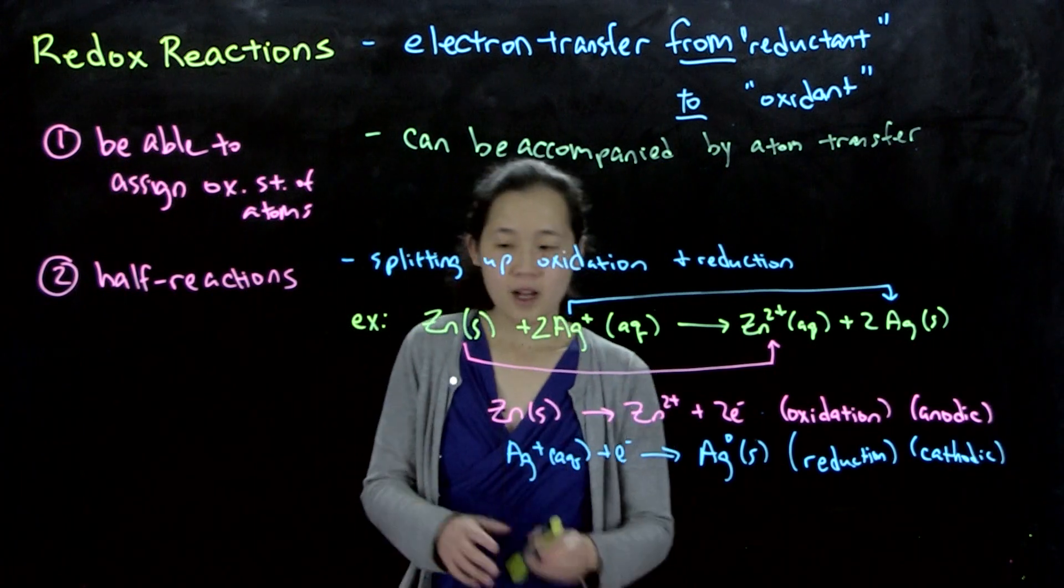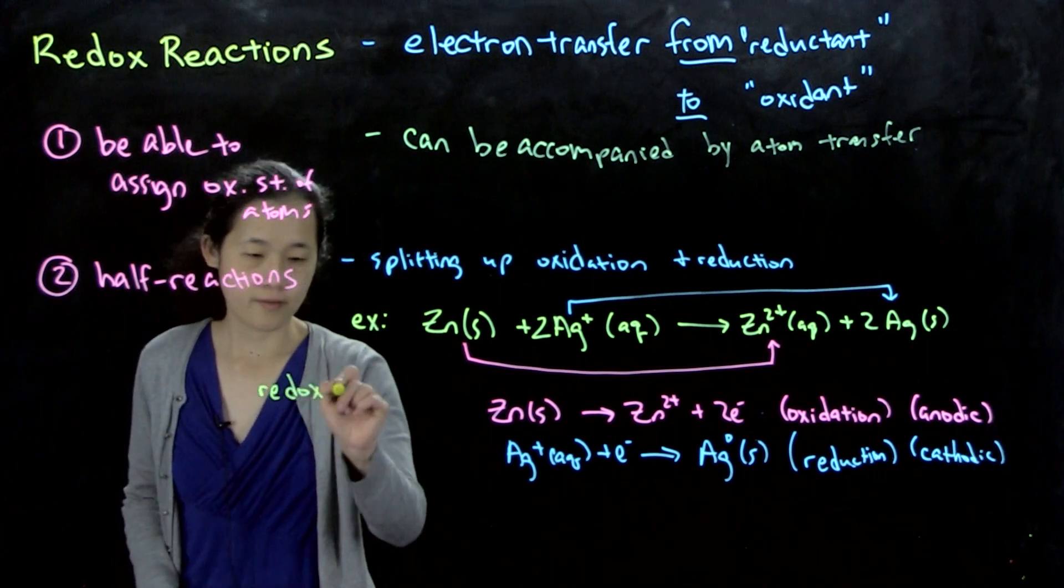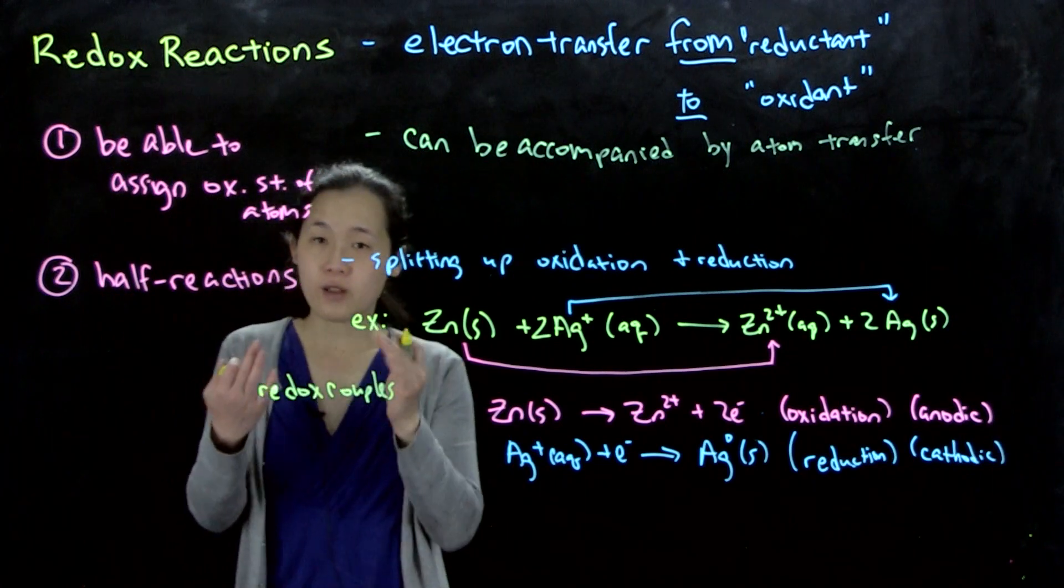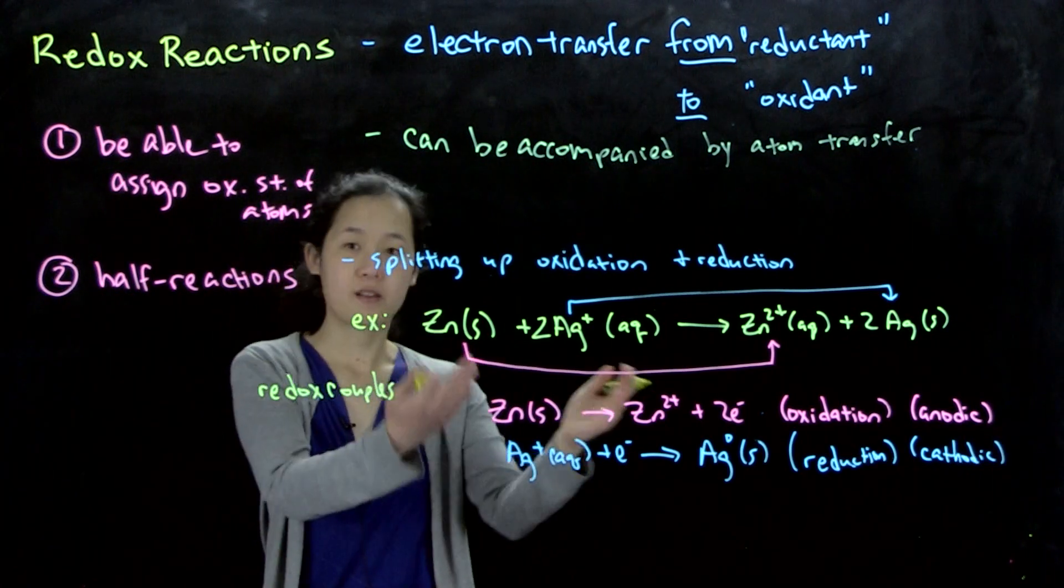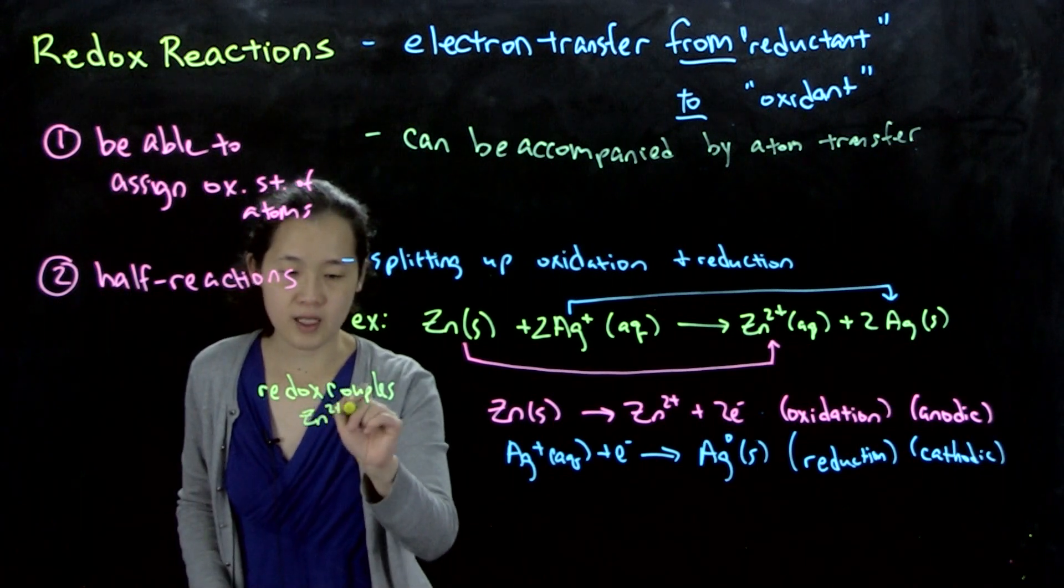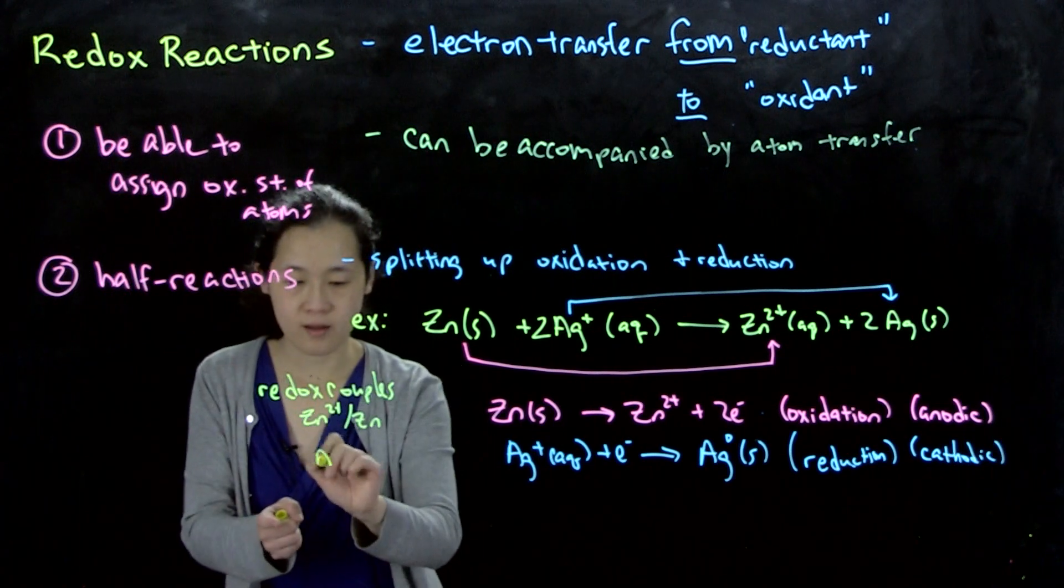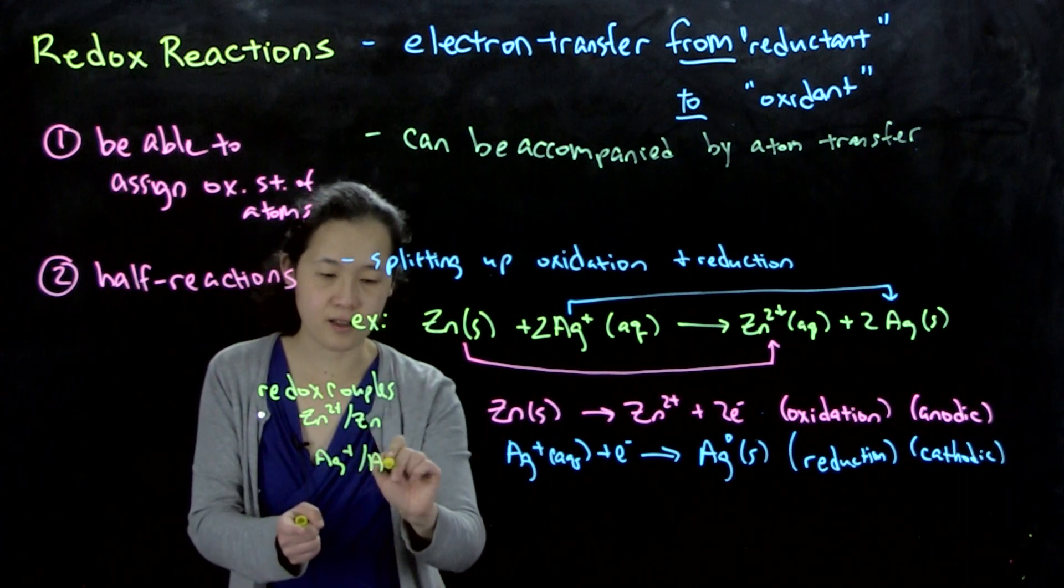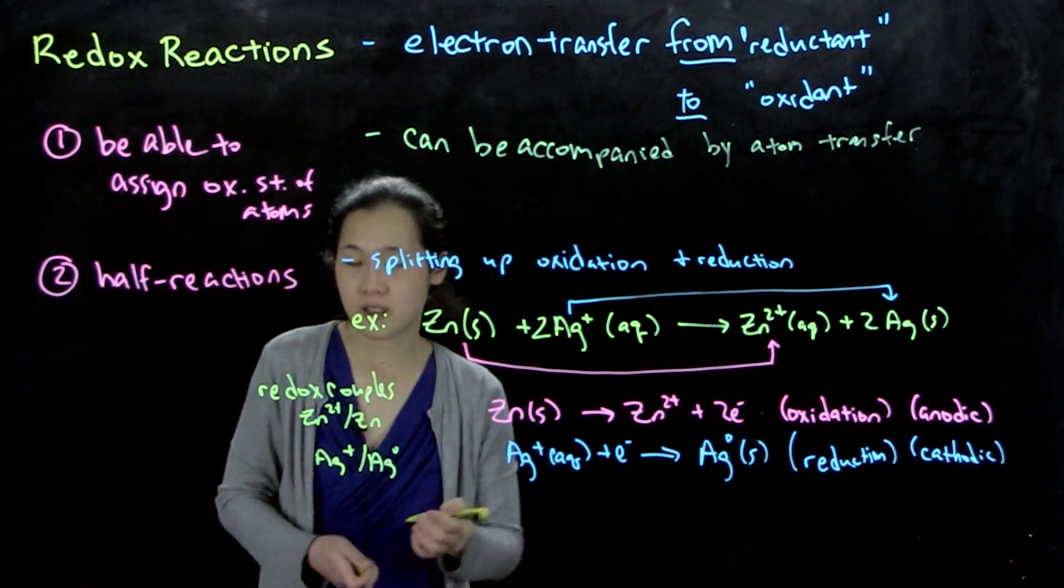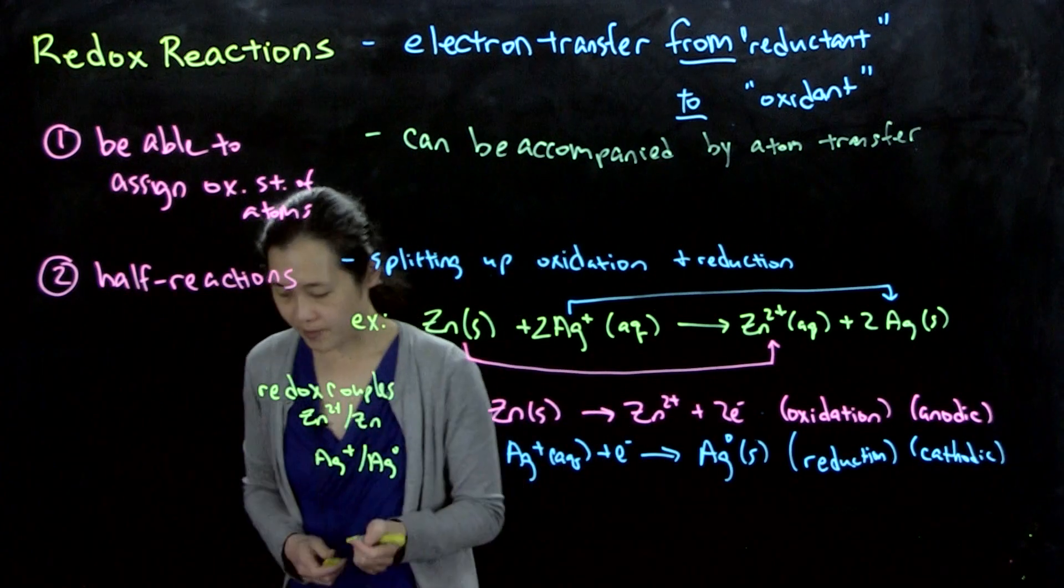And then another concept that we can talk about is redox couples. That's just what are the two components of either side. So for this one, we can consider the redox couple zinc 2 plus zinc. So the oxidized species and the reduced species, and then this one would be silver plus and silver 0. These are redox couples for each half reaction because they're what's on each side. That's the couple.